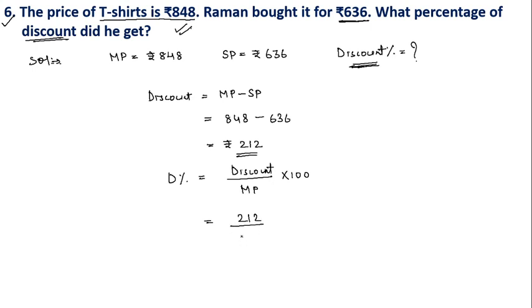Putting the values of discount and marked price into the formula: Discount% = (212 ÷ 848) × 100 = 25 percent. So Raman received a 25 percent discount on the T-shirt.